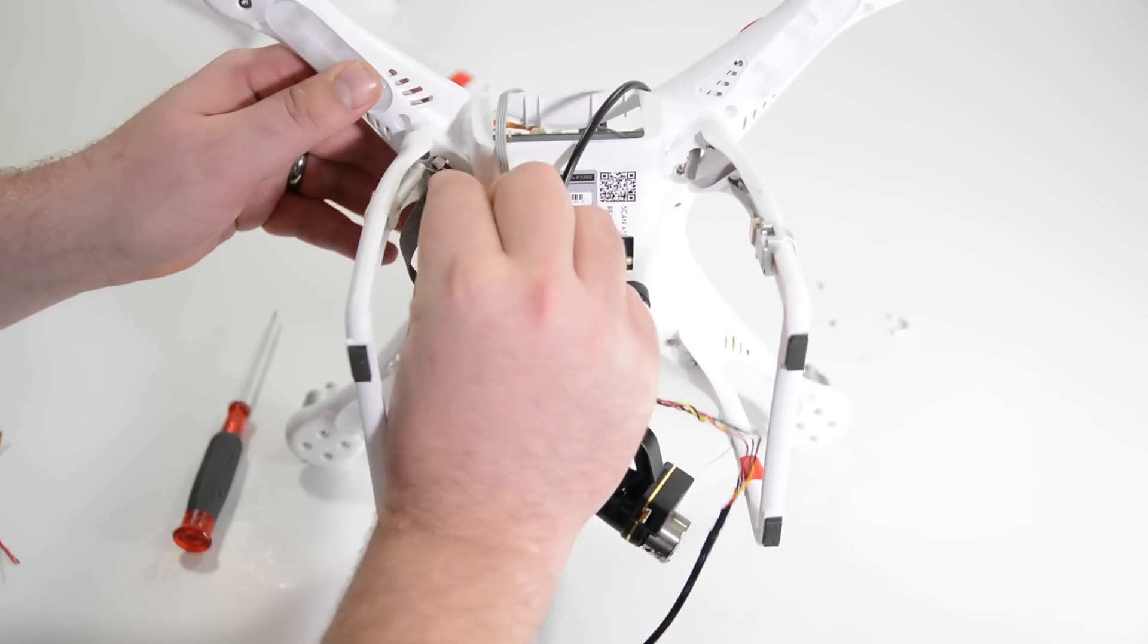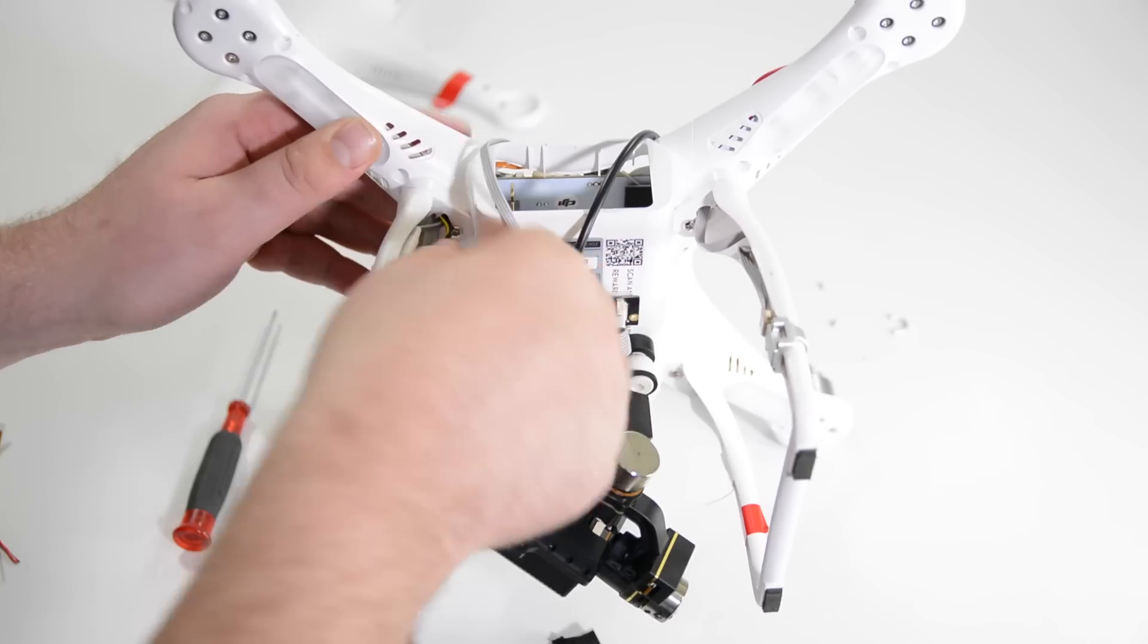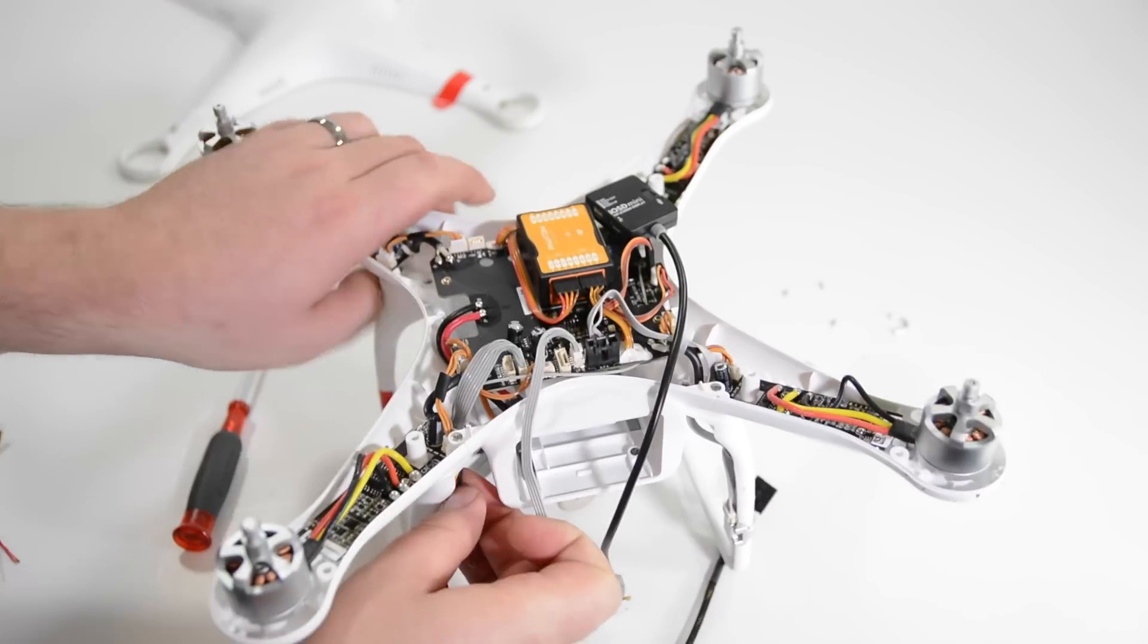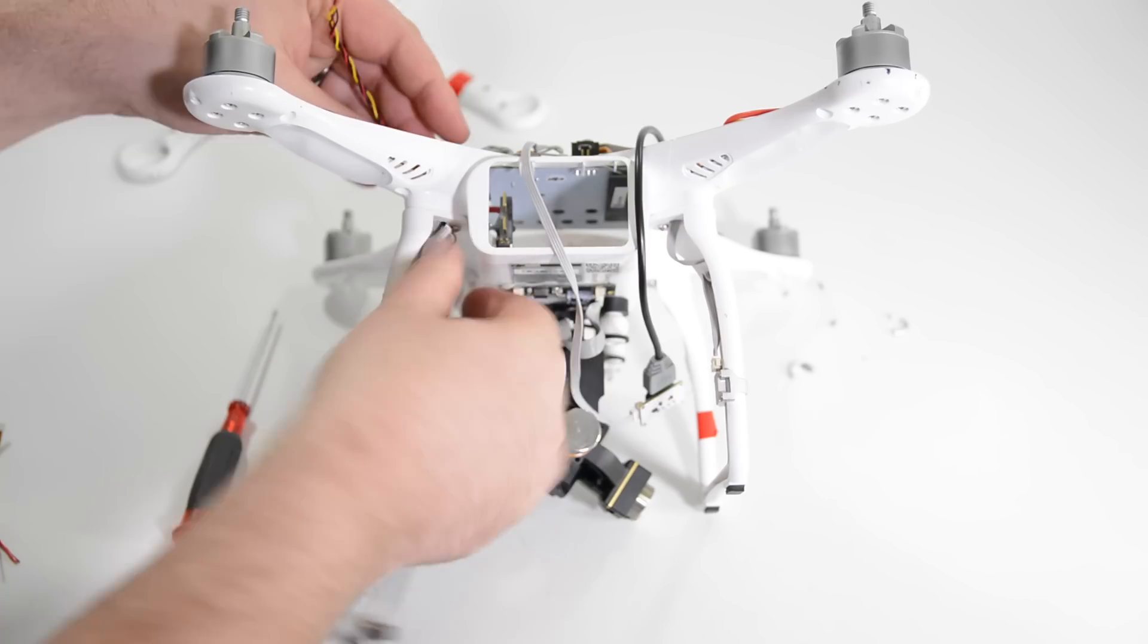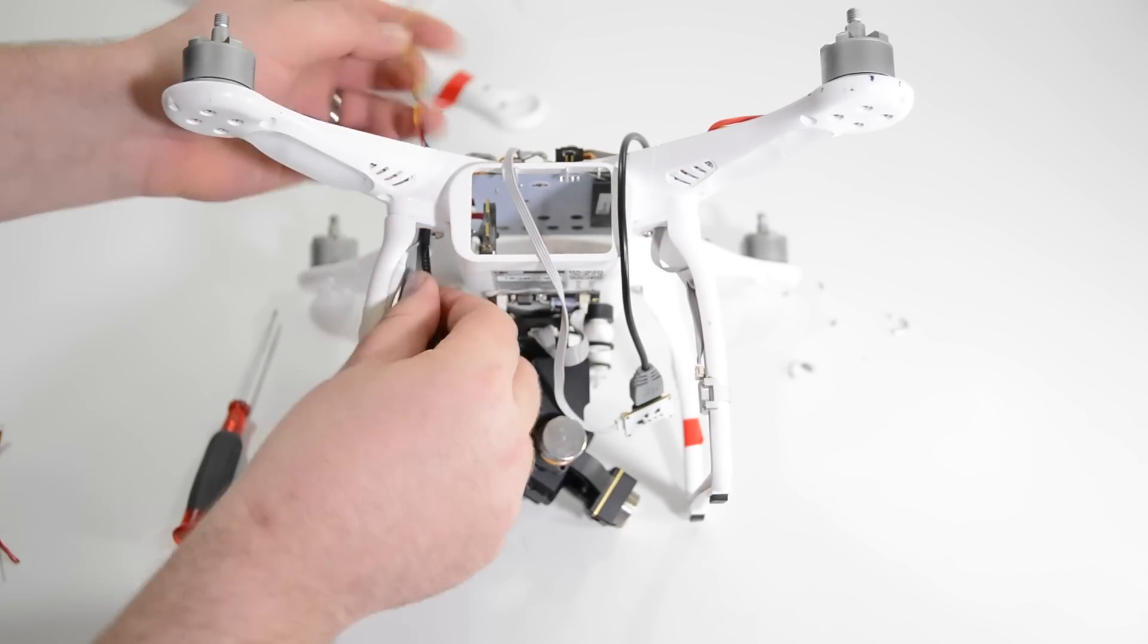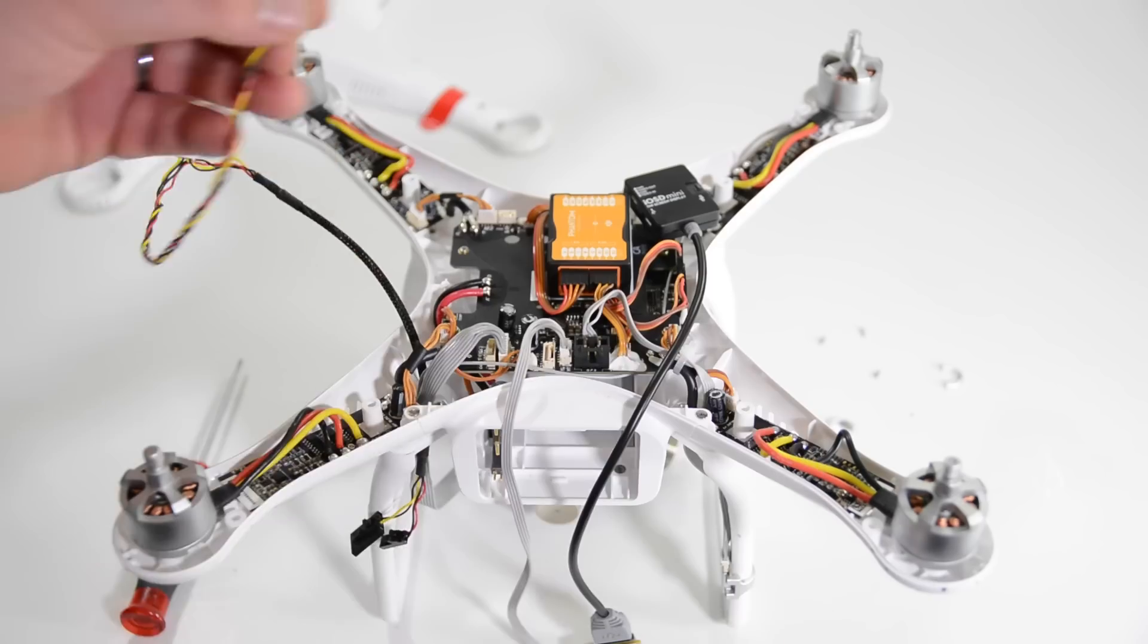So once we have that disconnected we'll go ahead and run the all in one cable up through the same hole that you just removed that colored cable from and we'll plug that same plug that's on the all in one cord back into that connected port there.